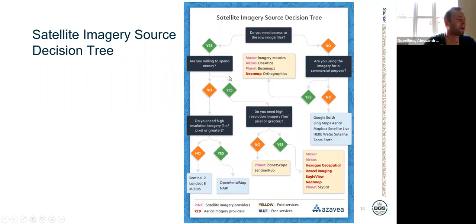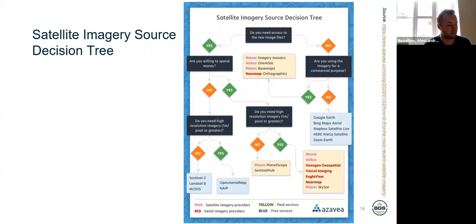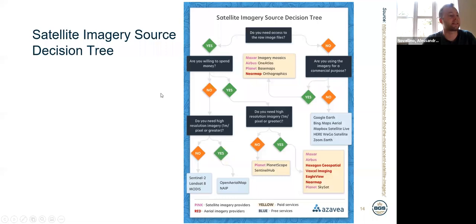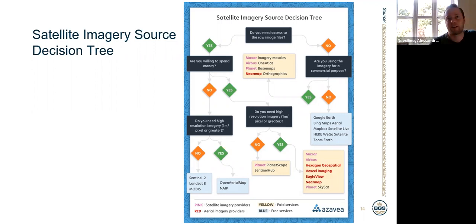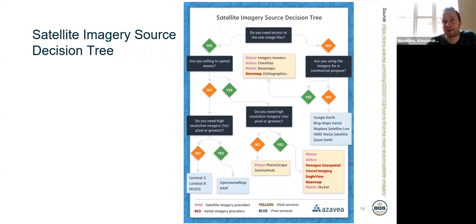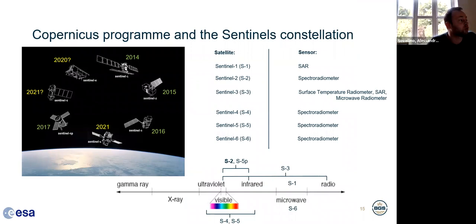If we are willing to spend money for greater resolution, there are plenty of commercial satellite providers. For the application of land cover mapping, we usually use free satellite data. But it's important to know that satellite data can become very expensive if we need high-resolution data from commercial providers, which would allow us to bring the science to a higher level and provide much more detail. But let's stay with the free satellite data.